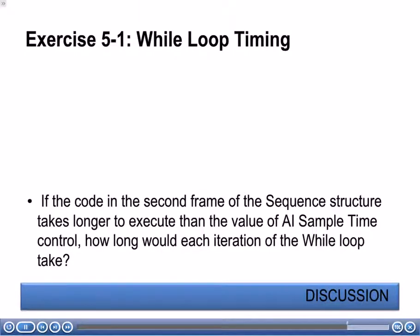Let's look at this discussion question: if the code in the second frame of the sequence structure takes longer to execute than the value of the AI sample time control, how long would each iteration of the while loop take? Each iteration will last the same amount of time it takes to execute the code in the second frame. The reason is that when the logic takes longer to execute than the specified interval, the loop timer express VI will return immediately and establish a new reference timestamp for subsequent calls.